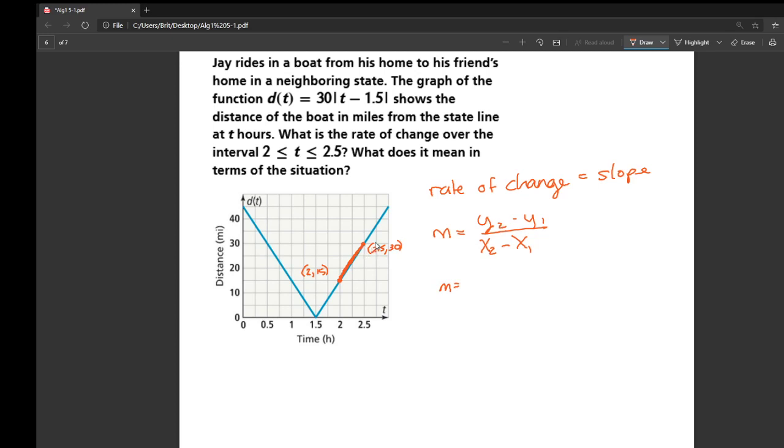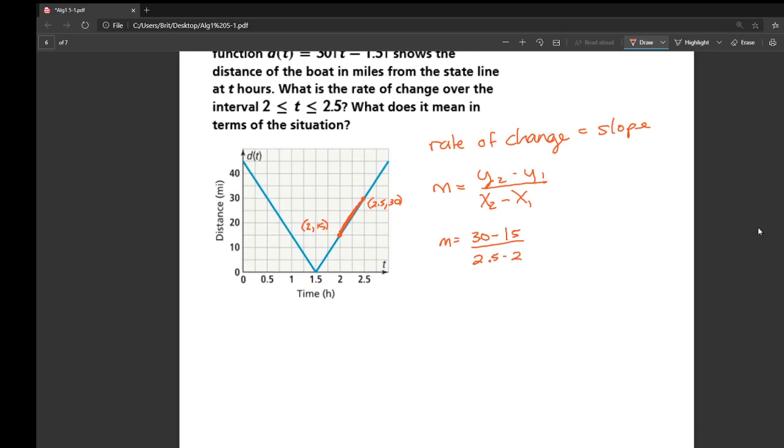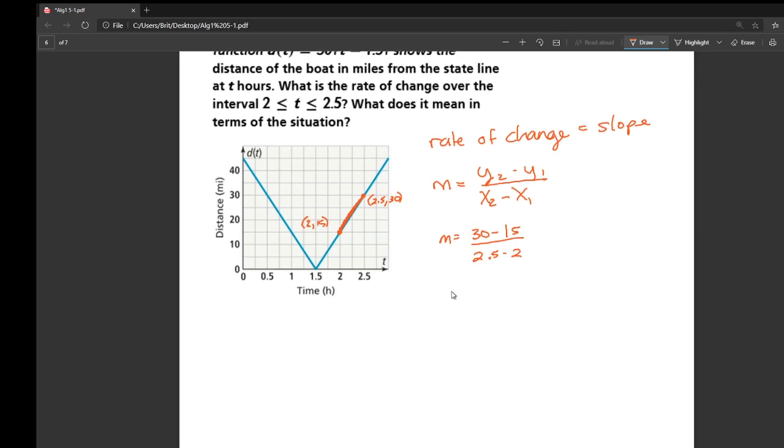I'm just going to plug those into the slope formula. So my Y2 is going to be my second value, which is 30, minus my Y1, which is 15. And then our Xs are the 2.5 and the 2. Right there where I had flipped my Xs and Ys, kids do that all the time. I think it's because the X comes first, so you want to write it on the top. Try not to make that goof the way I did.